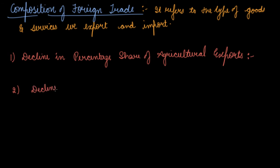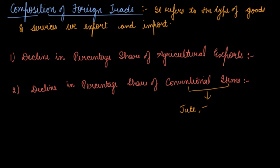Just because India started its farm products as raw material for its domestic industries. Second comes here, decline in percentage share of conventional items. See, the conventional items of India export includes your jute, tea, food grains, minerals. These are actually conventional items. These items constituted the bulk of India's export at the time of independence.